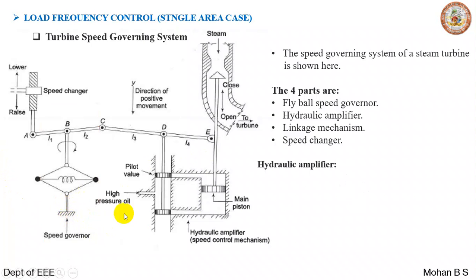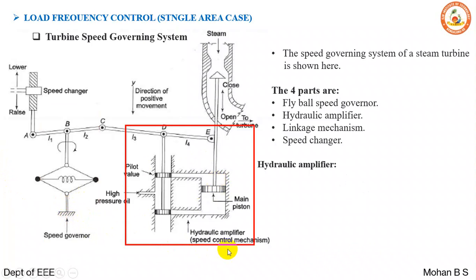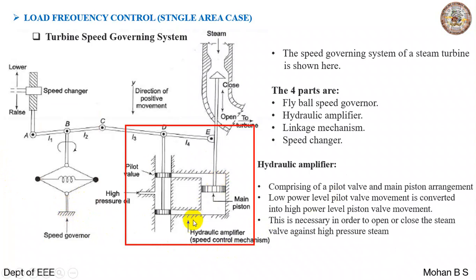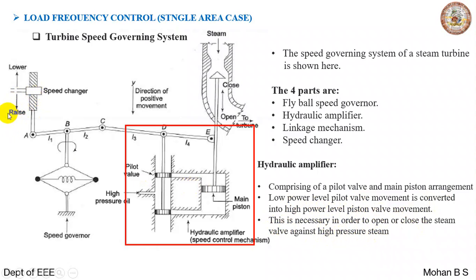The hydraulic amplifier comprises a pilot valve and a main piston arrangement. Low power level pilot valve movement is converted into high power piston valve movement. This is necessary in order to open or close the steam valve against high pressure steam. Depending upon whether the desire is to increase or reduce the frequency, we have multiple actions, which we will see shortly.